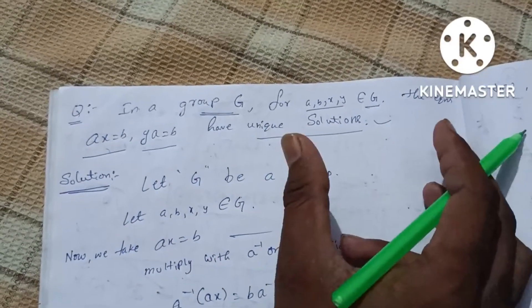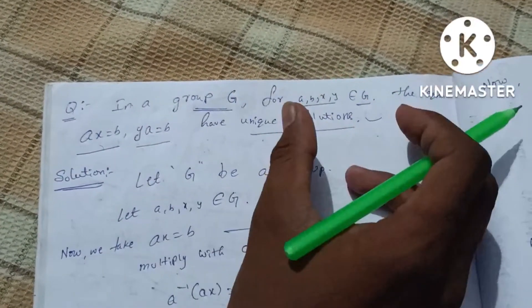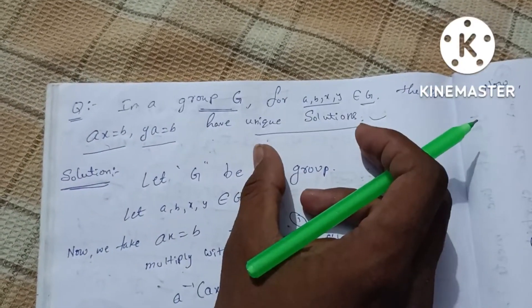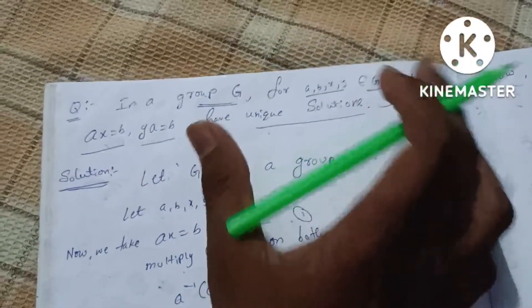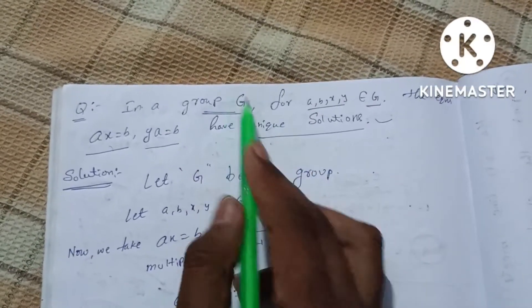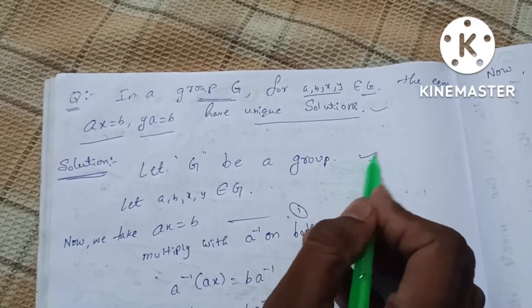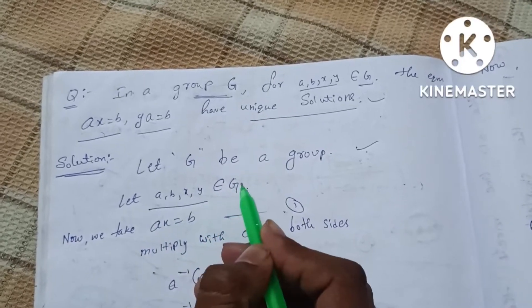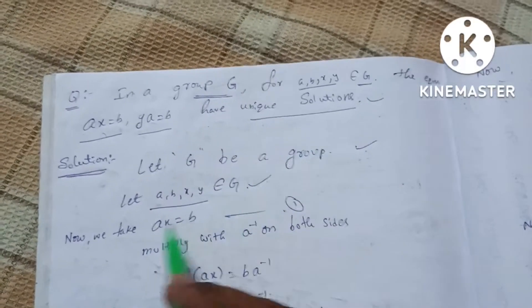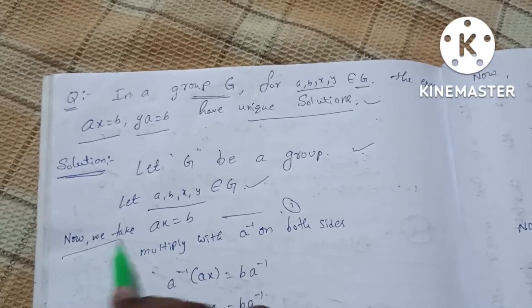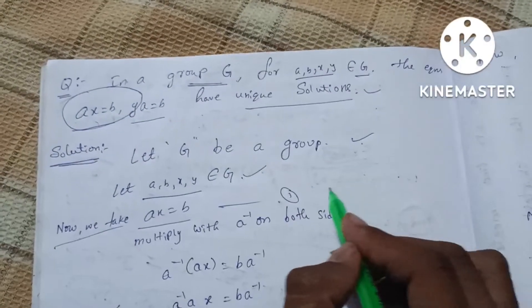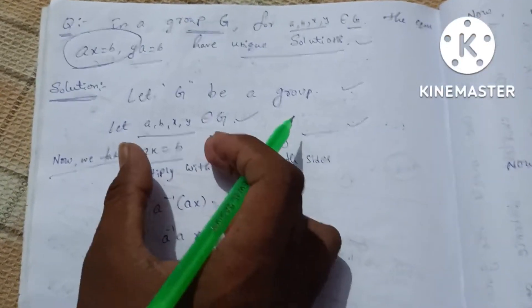We will prove it. Let G be a group, and let a, b, x, y belong to G. We have two equations to prove. Now, we take ax = b as the first equation.